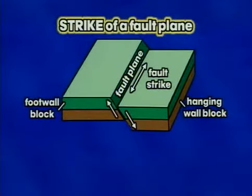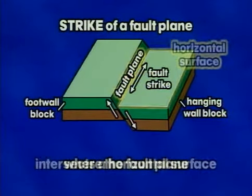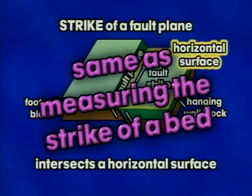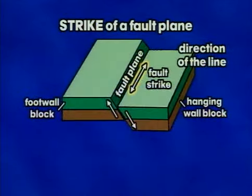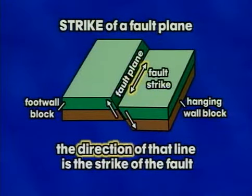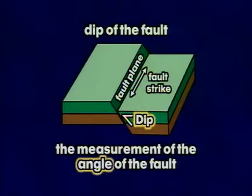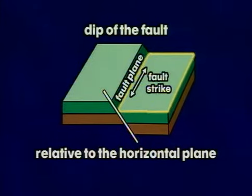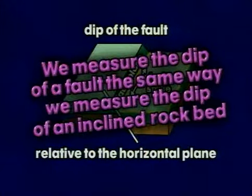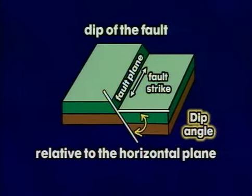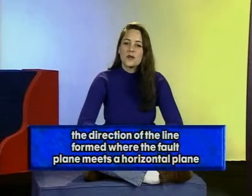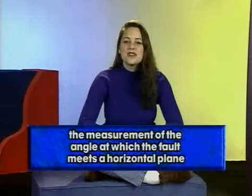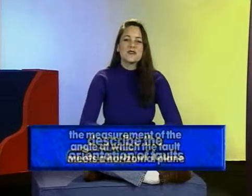The terms strike and dip apply to faults too. Strike and dip are rock geometry — measurements that describe the orientation of the fault. The strike of the fault plane is the direction of the line formed where the fault plane intersects a horizontal surface, just like measuring the strike of a rock bed. The dip is the measurement of the angle of the fault relative to a horizontal plane. The dip angle is measured from an imaginary line running perpendicular to the direction of the strike of the fault.